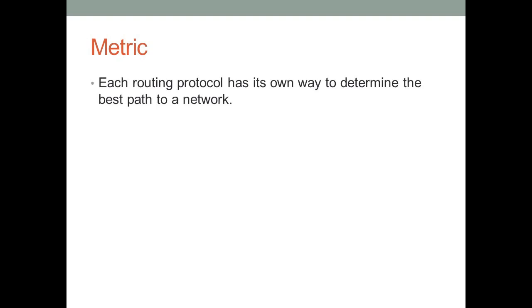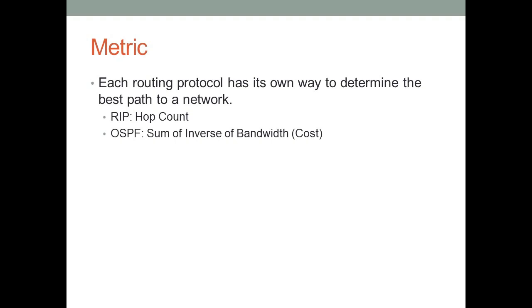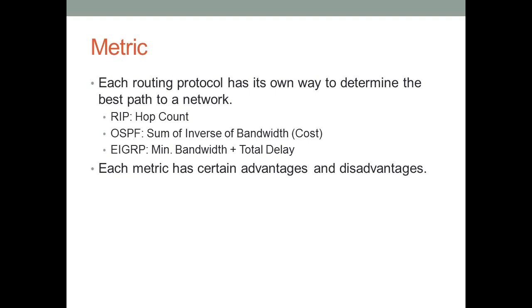We also need to talk about the concept of metric, which is used in many routing protocols. Each routing protocol has its own way to determine the best path to a network. For some it involves bandwidth, for others just a single hop count. With OSPF, the metric is the sum of the inverse of bandwidth, so higher bandwidth gives a lower cost. With EIGRP, it's a combination of minimum bandwidth on the link plus total delay across all traversed links. Each metric has its own advantages and disadvantages in terms of accuracy and ease of configuration.